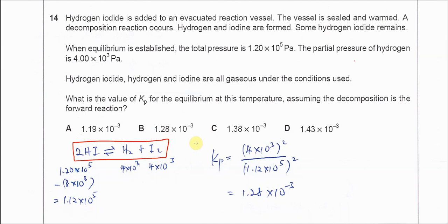At equilibrium, the given total pressure is 1.2 times 10 to the 5 Pascal, and the partial pressure of hydrogen is 4 times 10 to the 3 Pascal.